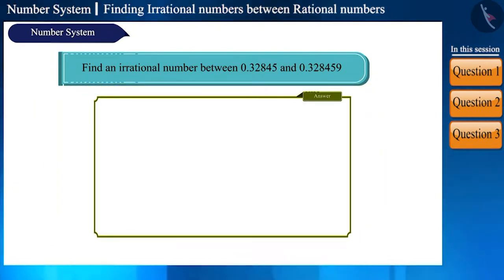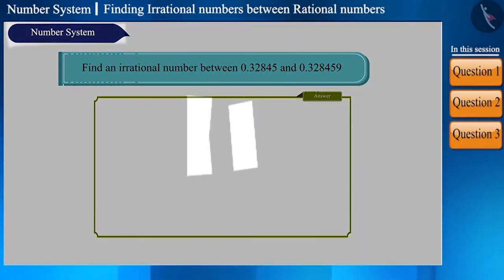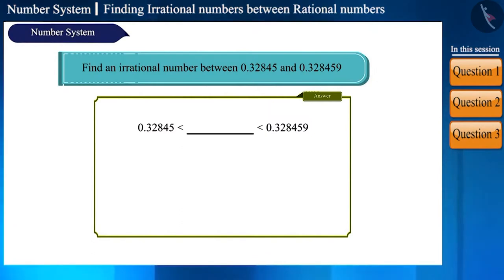Friends, we can pause the video to answer this question. Here we have to note that both these numbers are same up to 5 decimal places. So, here we have to keep the irrational number up to 5 decimal places. That is, 0.32845.